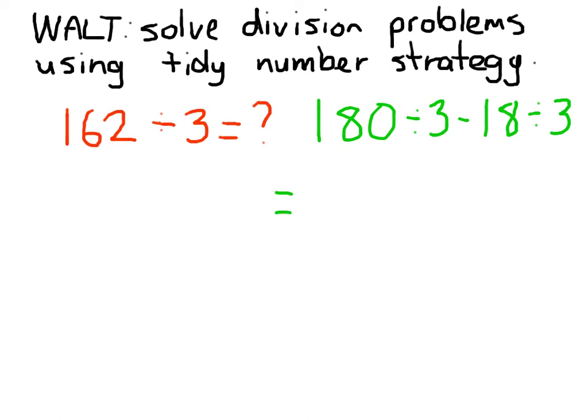So 180 divided by 3. We know that 18 divided by 3 equals 6, so 180 divided by 3 is 60. Take away 18 divided by 3, which is 6, and our answer is 54. Therefore, 162 divided by 3 equals 54.